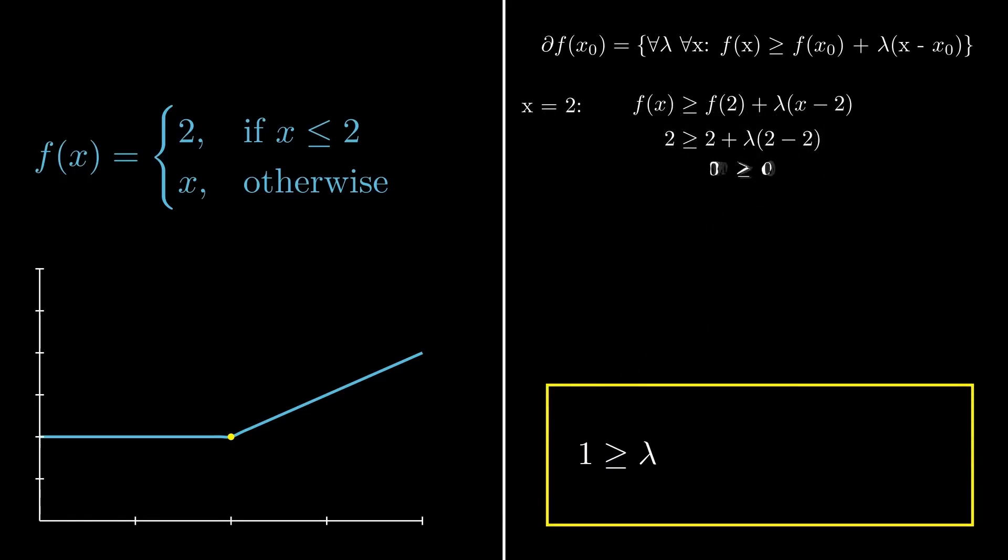If it is exactly 2, we get an equation that is true for any lambda value, so this does not restrict our result. If x is smaller than 2, lambda has to be larger or equal than 0.